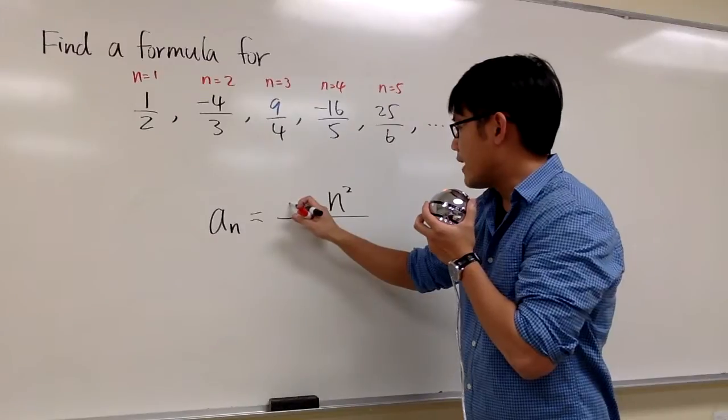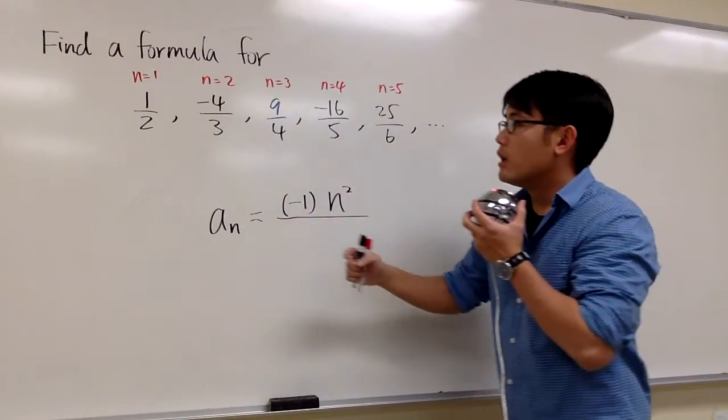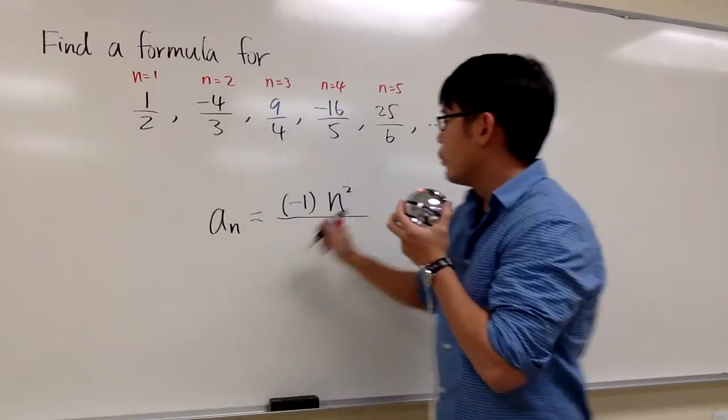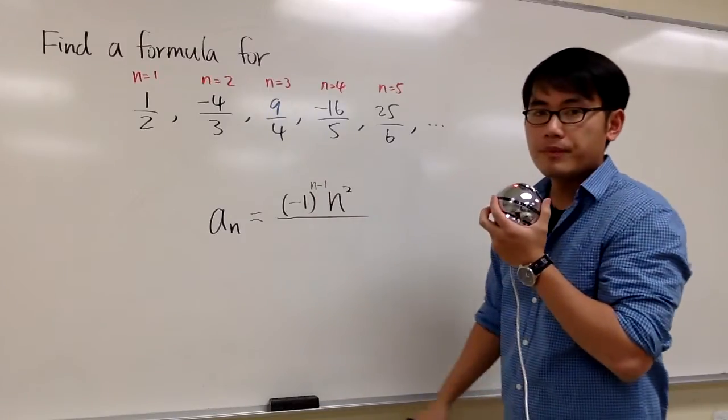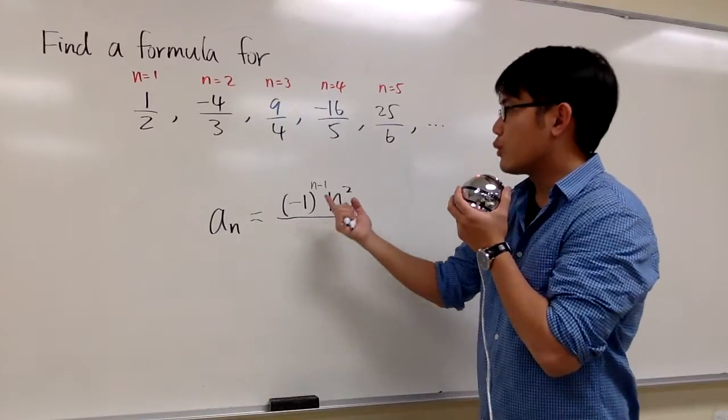This is how we take care of when the sign alternates. We multiply by a factor, negative 1 raised to some power. If we begin with a positive term, like positive 1, we raise negative 1 to the n minus 1 power. You can do this with n plus 1 as well, it doesn't matter.